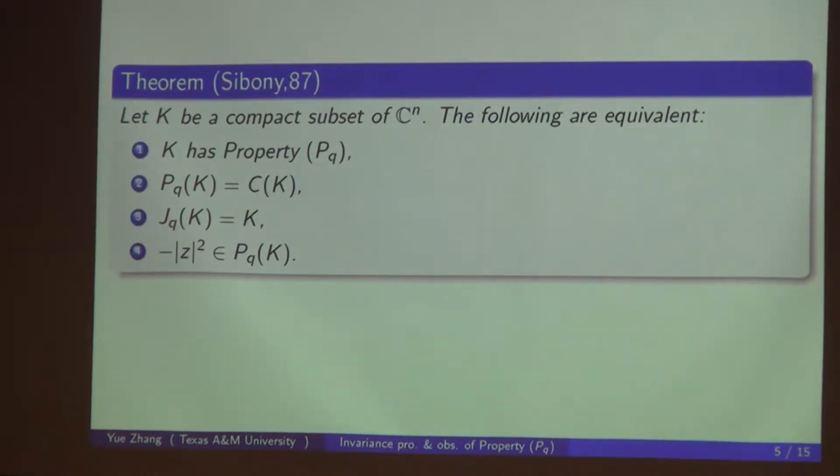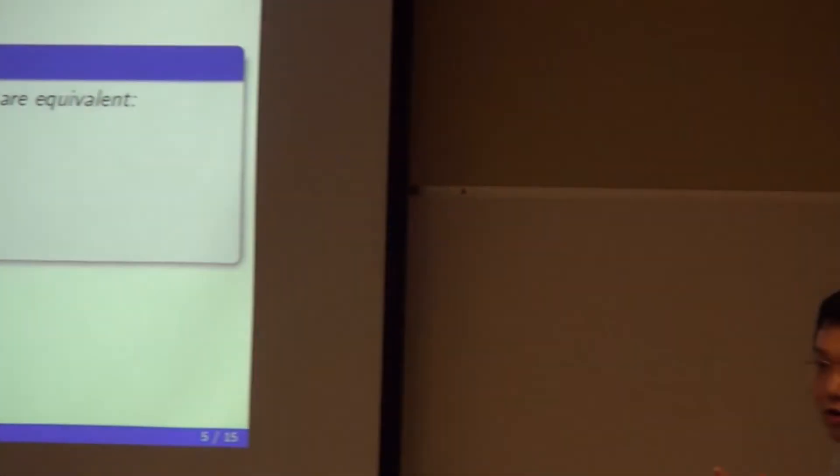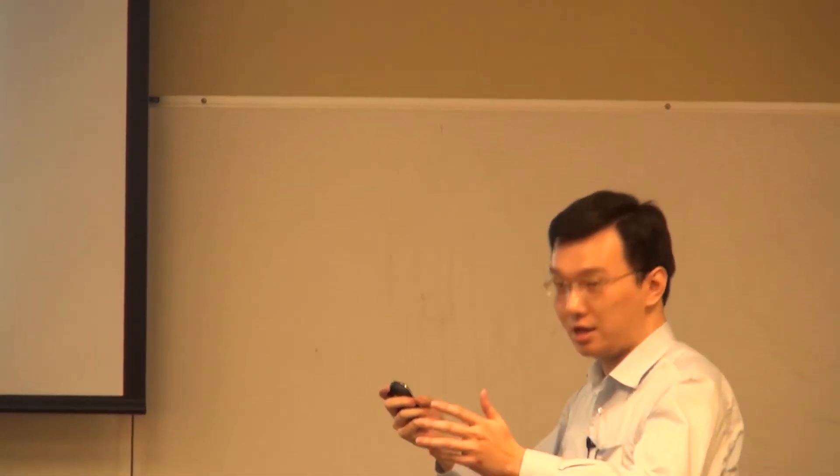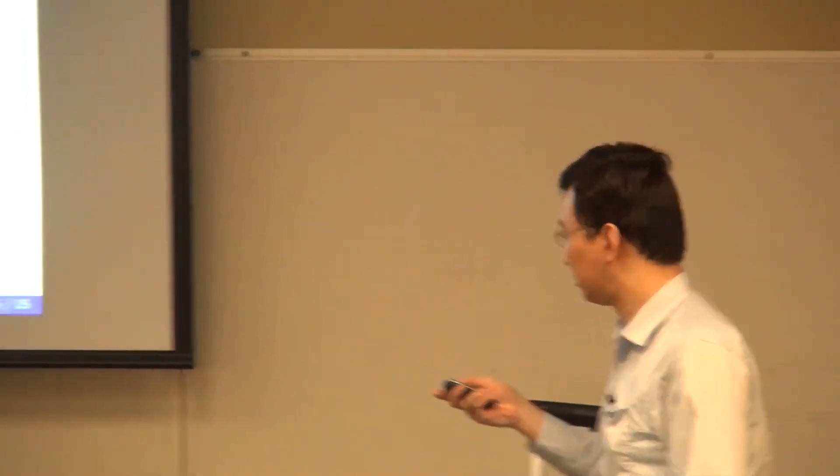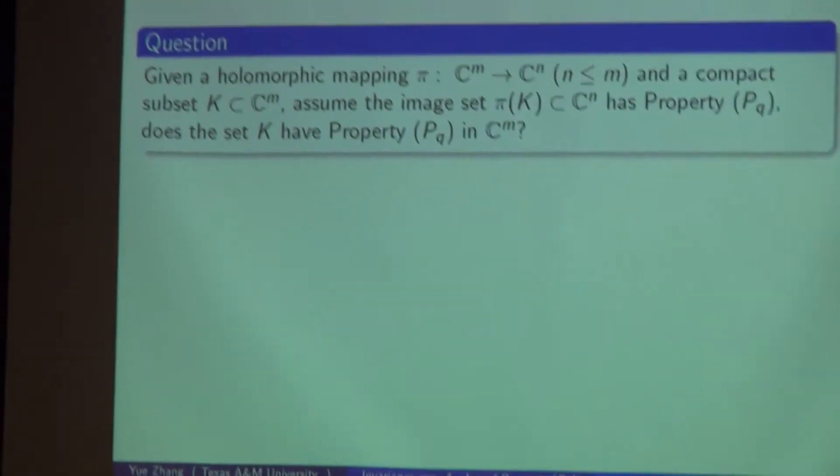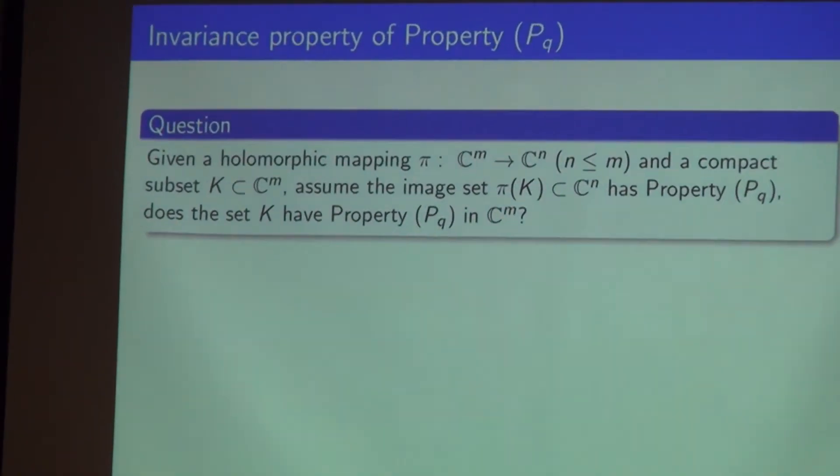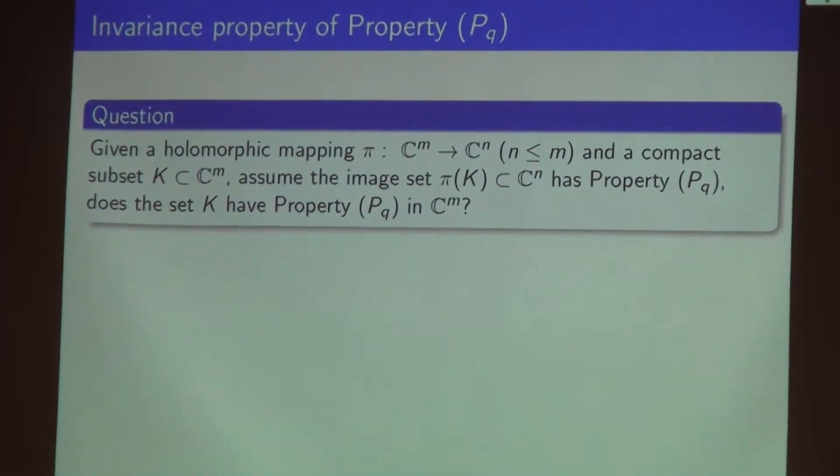Sibony showed that if you have a compact subset in C^n, the following are equivalent: K has property P_Q if and only if P_Q(K) equals C(K), and the Choquet boundary of K is equal to K, and negative modulus of z squared is in P_Q(K). Basically, the P_Q functions can approximate any continuous function of K.